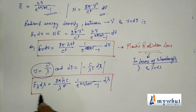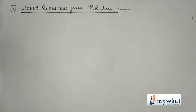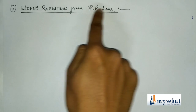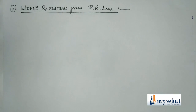These two are the most important formulas, and we will be deriving the rest of the formulas from them. Starting with the derivations, we will first derive Wien's radiation law from Planck's radiation law.